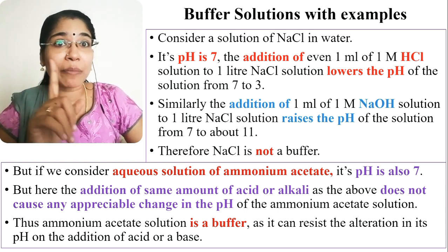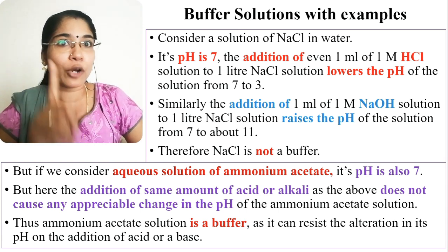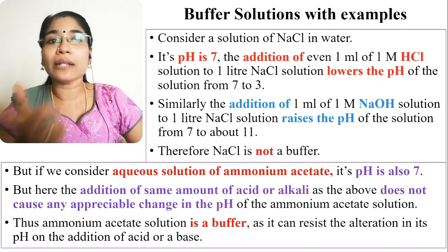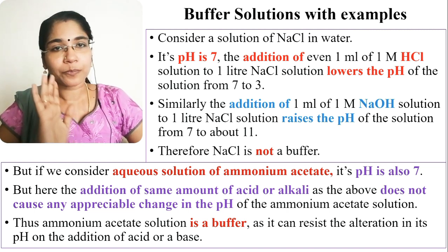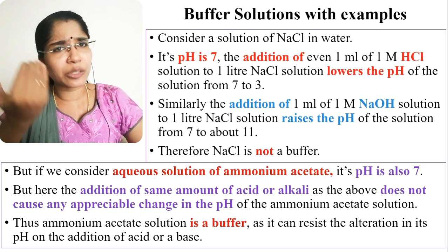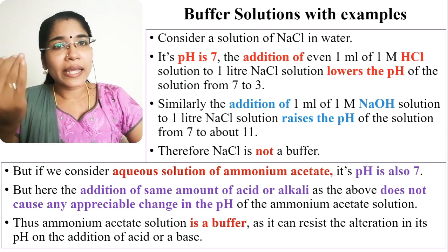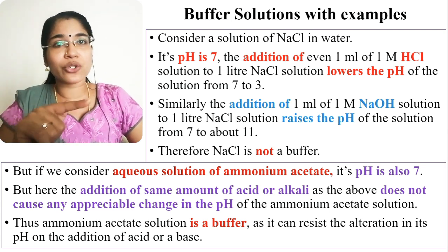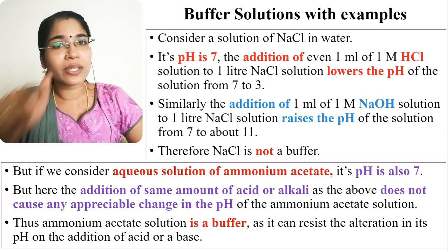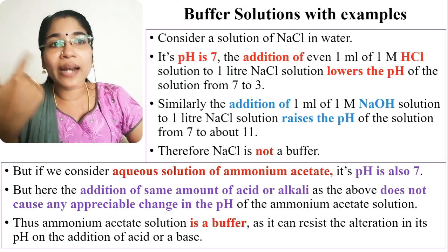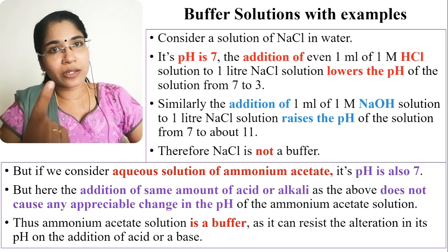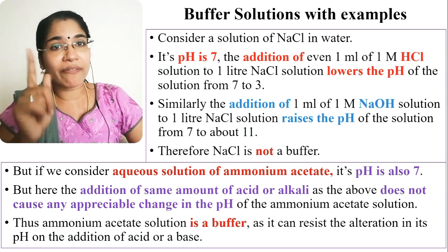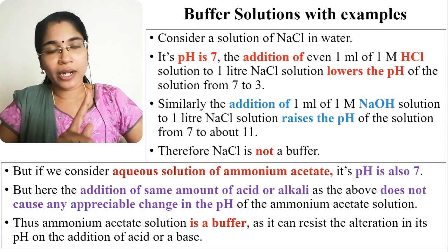If we add 1 ml of acid, that will lower the pH. Similarly, if we are adding 1 ml of NaOH solution to this NaCl solution, that will raise the pH from 7 to 11.